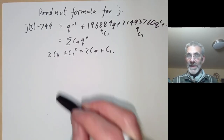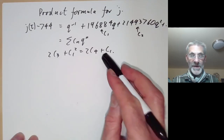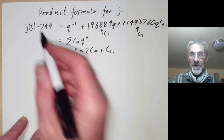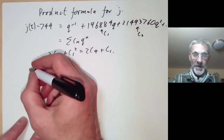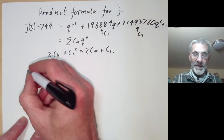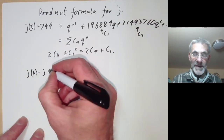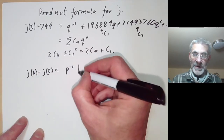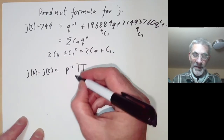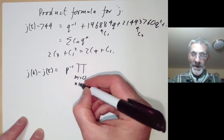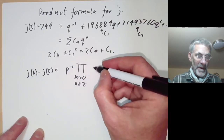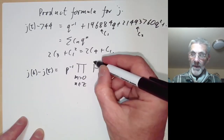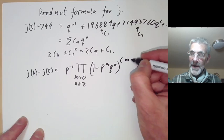There's a neat way to understand all these complicated relations, which is the product formula for the elliptic modular function. This says that j(σ) - j(τ) equals p^{-1} times the product over m > 0 and n ∈ ℤ of (1 - p^m q^n)^{c(mn)}.